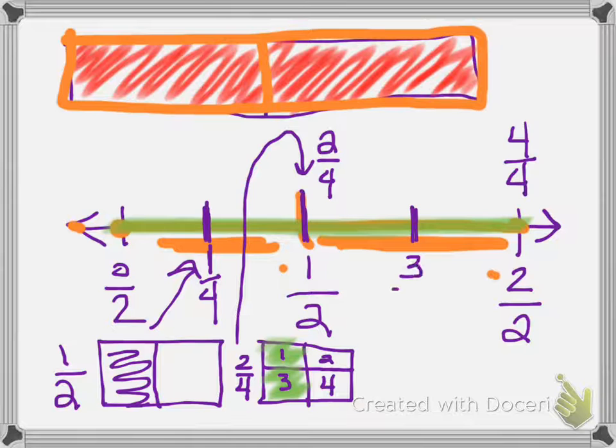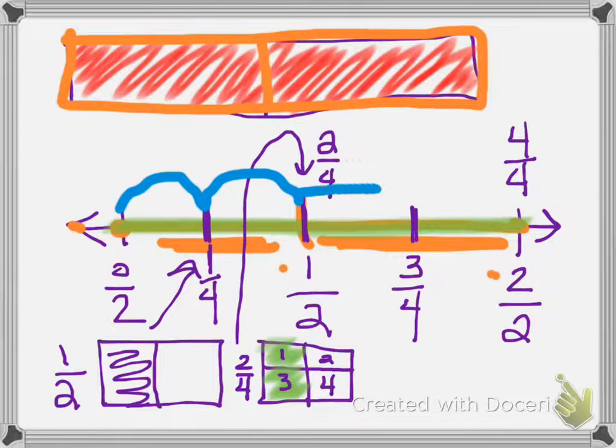Right here would be three portions out of four. So if I go back through, and I have one fourth, two fourths, three fourths, four fourths. So I have equivalent fractions here on my number line.